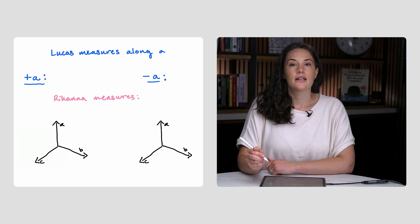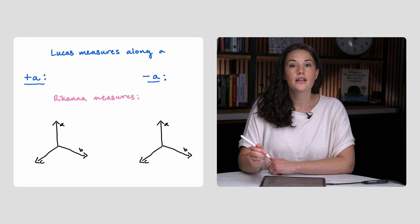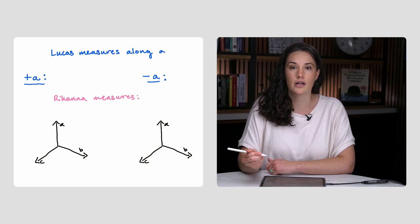So to see what quantum mechanics predicts, say Lucas measures along A. Two things can happen. Either he measures spin up, so Rihanna would measure spin down along A, or he measures spin down and Rihanna would measure spin up along A.